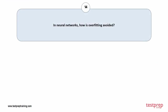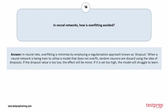Question number fourteen: in neural networks, how is overfitting avoided? In neural networks, overfitting is minimized by employing a regularization approach known as dropout. When training a neural network, random neurons are discarded using the concept of dropouts. If the dropout value is too low the effect will be minor; if it is set too high, the model will struggle to learn.